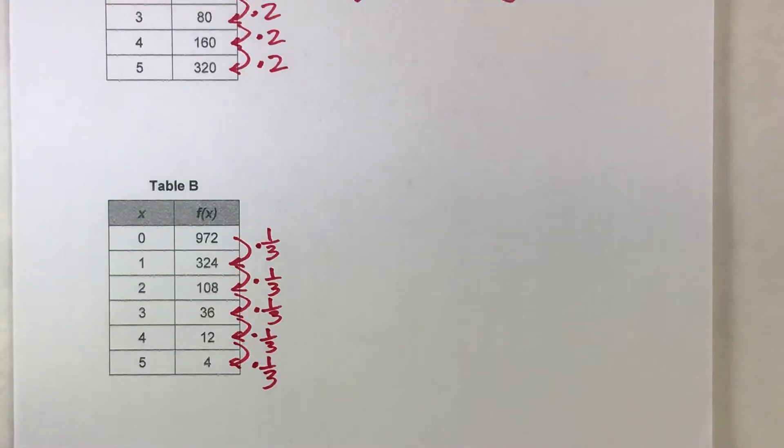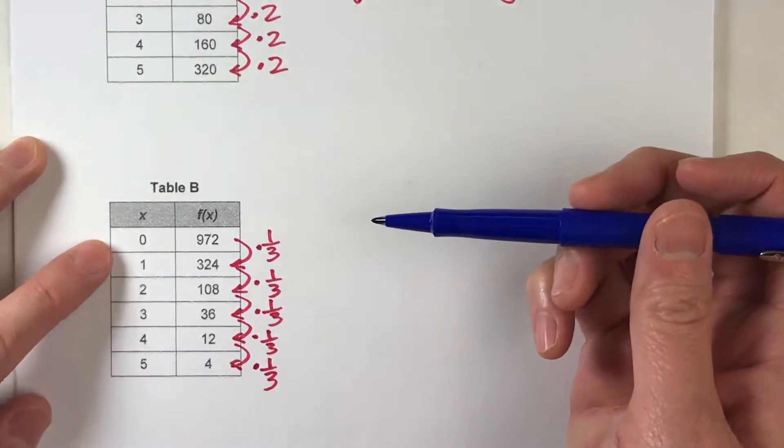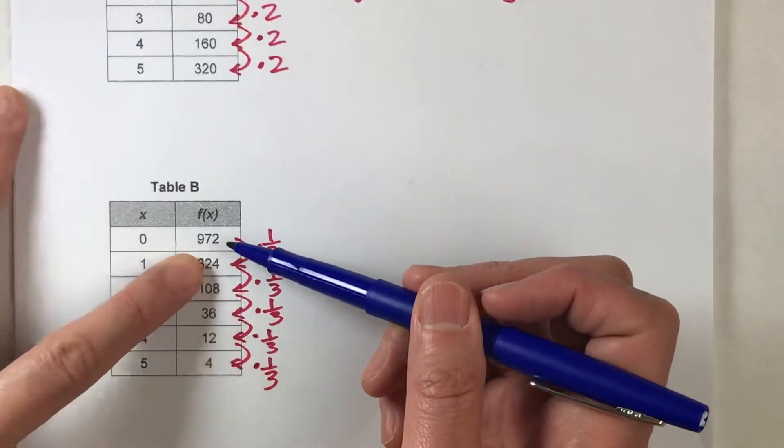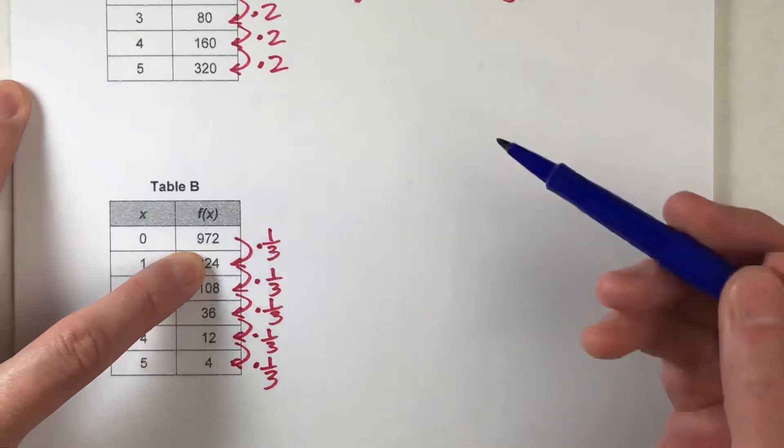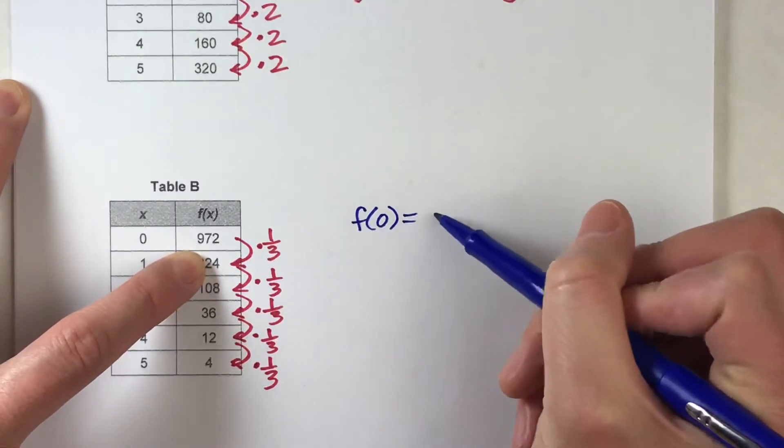So, now, how do we write the recursive equation? First thing we need is we need to know where does the table start. Well, when x is zero, our table starts at 972. So our first line of our recursive equation is f of zero equals 972.